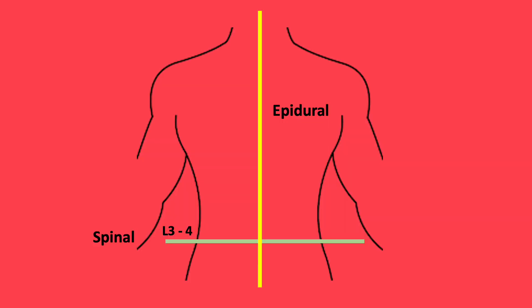Spinal techniques are usually performed below the spinal cord. The spinal cord ends at L1 and L2, so it can be performed usually at L2 to L5, but classically L3 to L4. Conversely, epidural techniques can be largely performed at any vertebral level — from the cervical, thoracic, lumbar and sacral. Sacral epidurals are commonly used in children, also known as caudals.